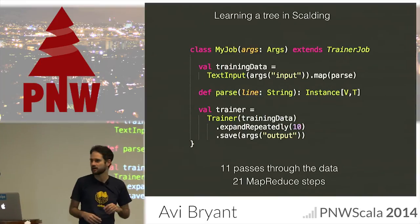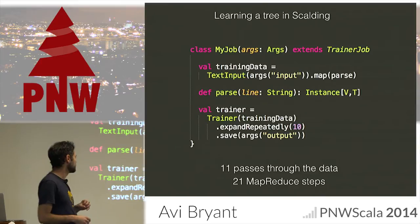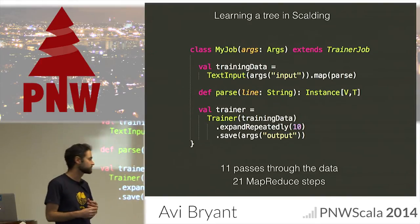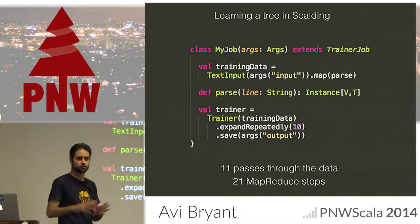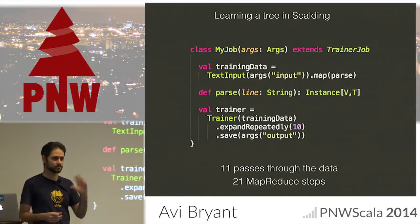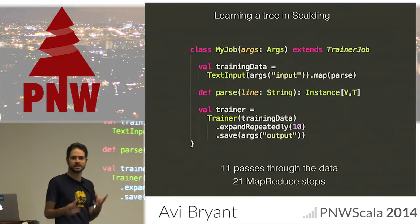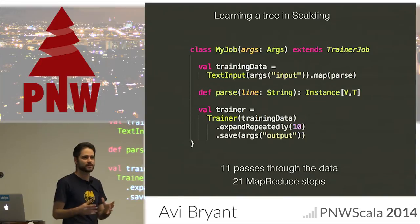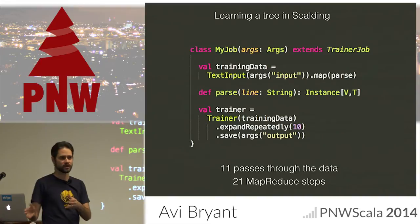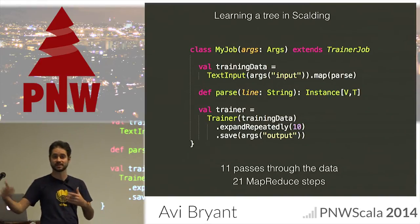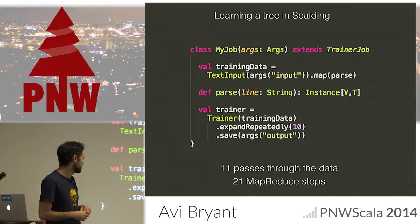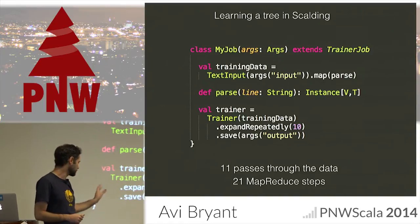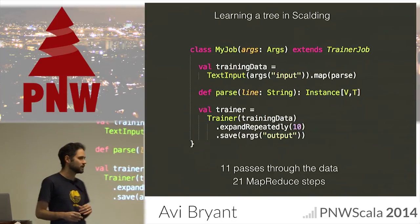So what does this look like concretely? Here's a simple example of using Scalding — a framework for doing Hadoop stuff in Scala — to train one of these trees. The first thing we want to do is read our training data and parse it into Brushfire's instance objects. Training data has both the features and the prediction — you're trying to generalize from that to make predictions later when you have features but no known prediction. We construct a trainer object with the training data and ask it to expand the tree. This is 11 passes through the data — expanding the tree 10 times — and 21 MapReduce steps.